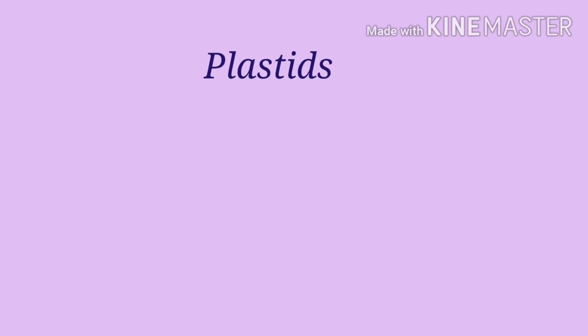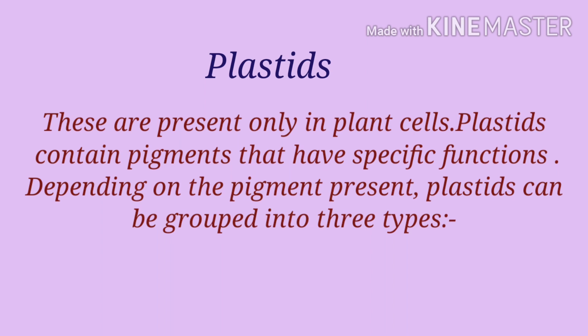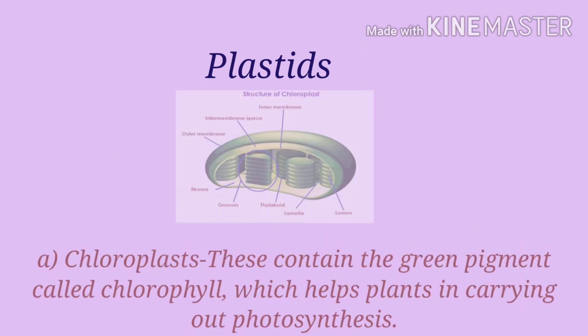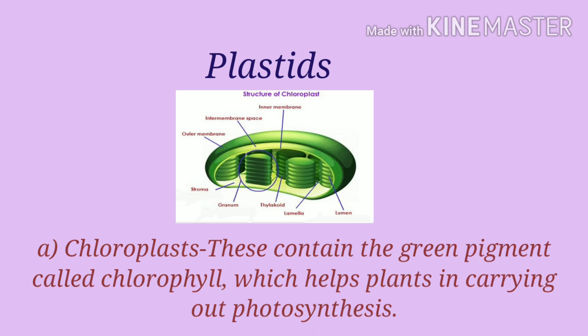My next topic is plastids. These are present only in plant cells. Plastids contain pigments that have specific functions. Depending on the pigment present, plastids can be grouped into three types. Number A is chloroplast. This contains the green pigment called chlorophyll which helps plants in carrying out photosynthesis.